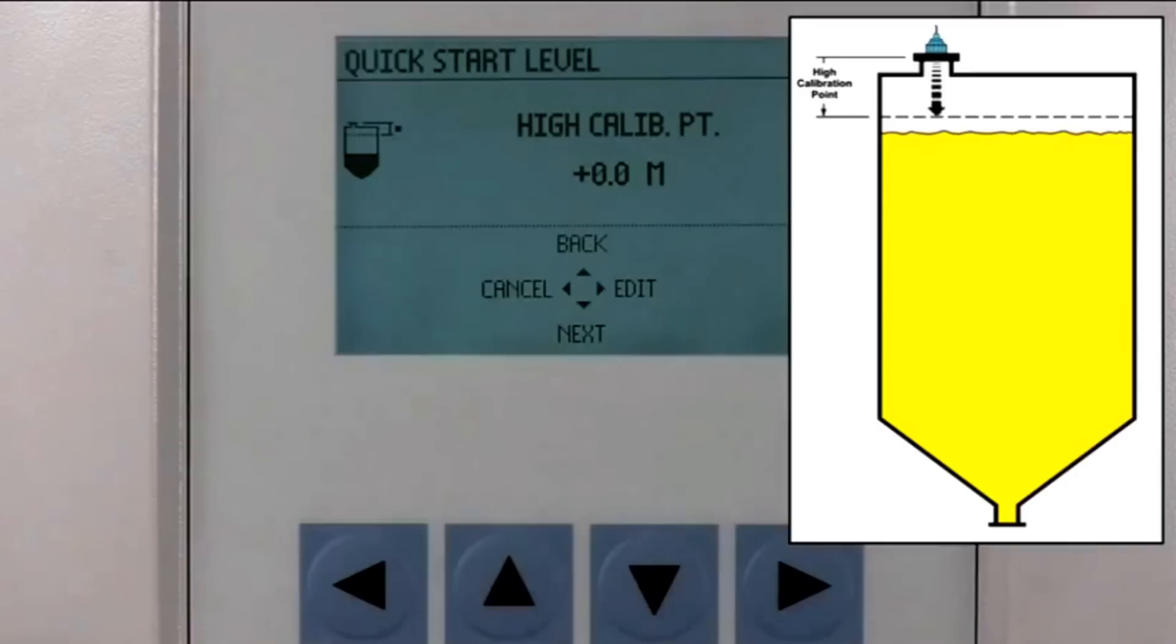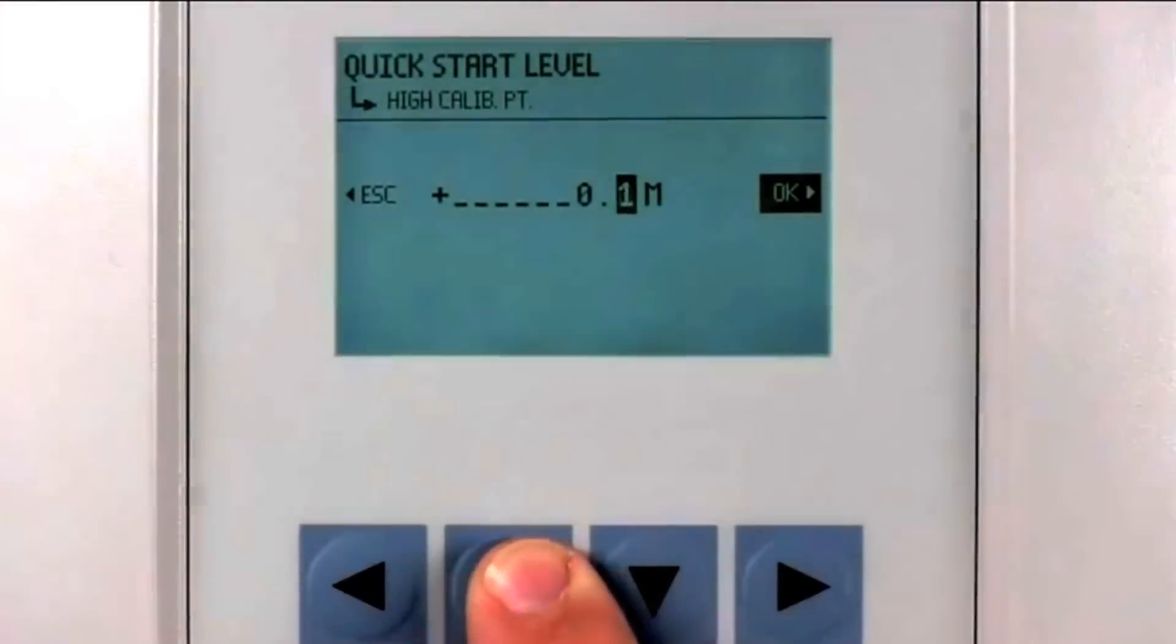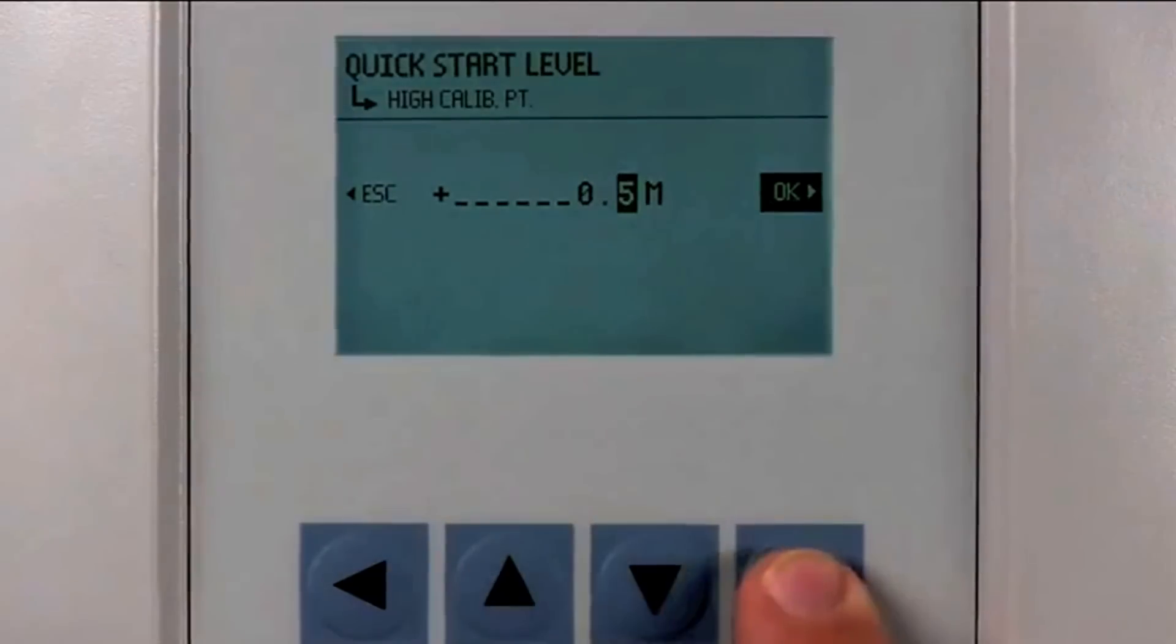The high calibration point is the distance from the transducer face to the highest point the material level will reach under normal operating conditions. We will enter a value of 0.5 meters in this parameter.